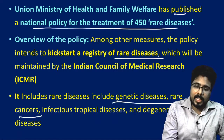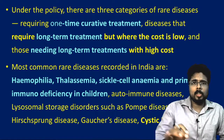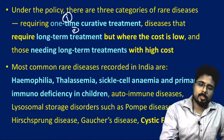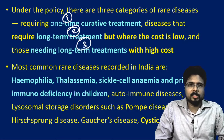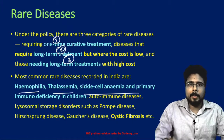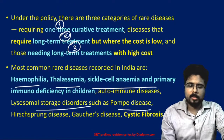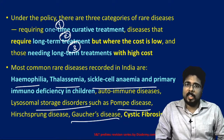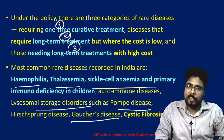These rare diseases include genetic diseases, rare cancers, infectious tropical diseases, and degenerative diseases. Under this policy, there are three main categories: first, one-time curative treatment; second, long-term treatment of low cost; and third, long-term treatment of high cost. The most common rare diseases in India are haemophilia, thalassemia, sickle cell anemia, primary immunodeficiency in children, autoimmune diseases, lysosomal storage disorders, Gaucher disease, and cystic fibrosis. ICMR will prepare a database to make institutional arrangements to fight these diseases.